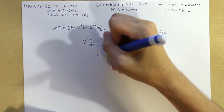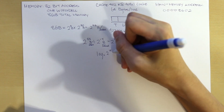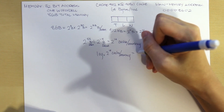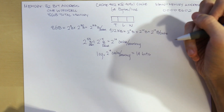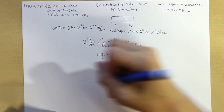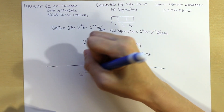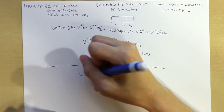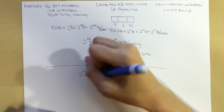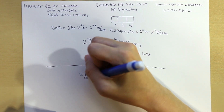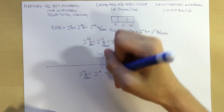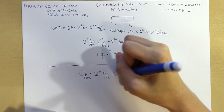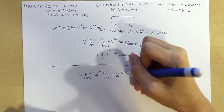If we take log base 2 of 2^14 cache per memory, it gives us 14 bits — this is our tag, which is 14 bits. Next, we find our line: we take 2^19 bytes per cache and divide that by 2^6 bytes per line, which gives us 2^13 lines per cache.